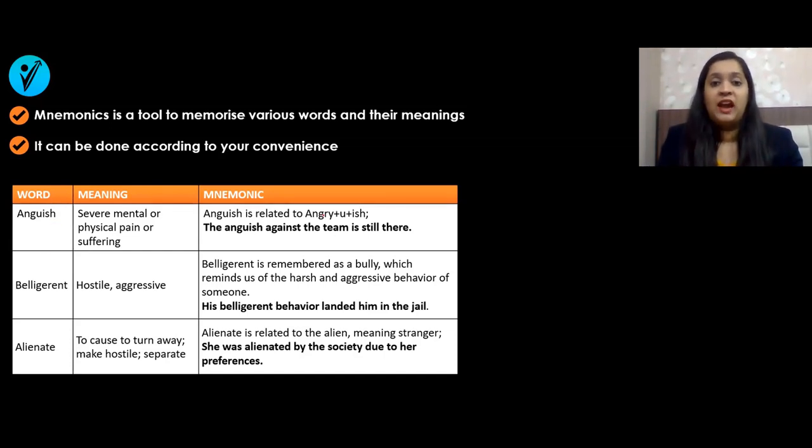See, there is this word 'anguish.' I can say 'angry-ish'—it will help you understand it has to do something with being angry, and being angry has something to do with severe mental or physical pain. The anguish against the team is still there. Belligerent means hostile or aggressive. You can remember it as 'bully'—a bully has got that aggressiveness.